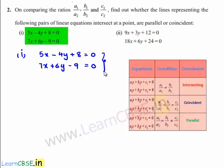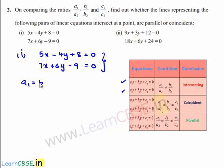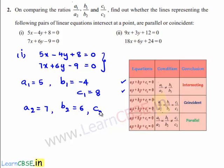On comparing the given set of equations with the standard equations a1x plus b1y plus c1 is equal to 0 and a2x plus b2y plus c2 is equal to 0, we get a1 is equal to 5, b1 is equal to minus 4, c1 is equal to 8, and a2 is equal to 7, b2 is equal to 6, and c2 is equal to minus 9.